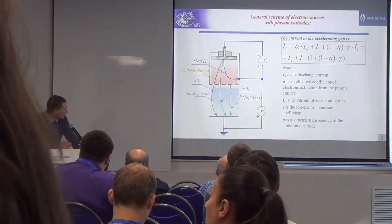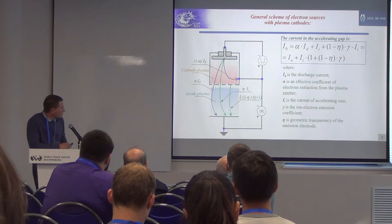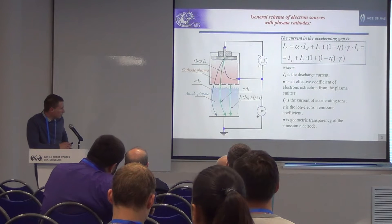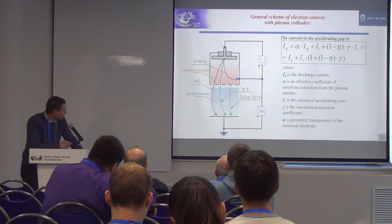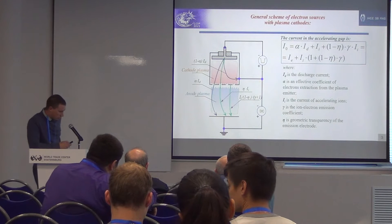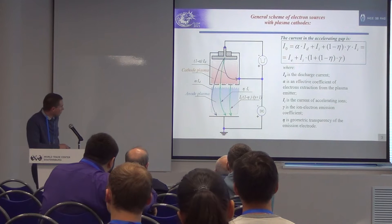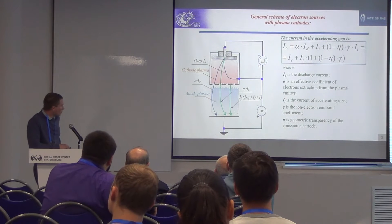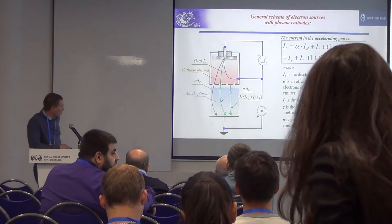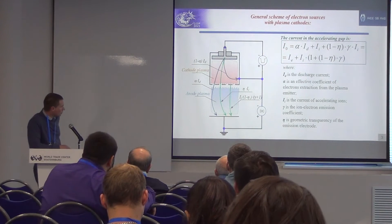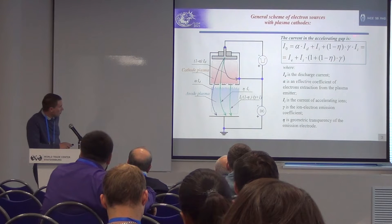I will tell you about electron sources with a plasma cathode on the basis of low-pressure arc discharge. It doesn't matter what the parameters of these electron sources are, because it's a typical scheme for a lot of sources. This electron source has a cathode plasma or emission plasma, and an anode plasma or beam plasma, where the anode plasma is generated by the electron beam itself. The common current in the accelerating gap can be described by a formula.